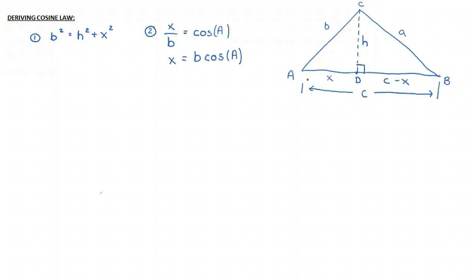So now we're going to focus on triangle BDC. So let's focus on that one. And a starting point for this one would be that we can say that A squared is equal to H squared plus C minus X squared. And that's simply using Pythagoras theorem and looking at this triangle here.